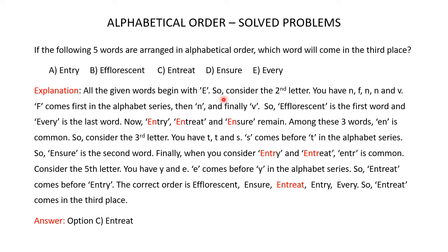So you have to consider the second letter. The second letters are N, F, N, N, and V. Now F comes first in the alphabet series, then N, and finally V. So Efflorescent is the first word and Every is the last word.